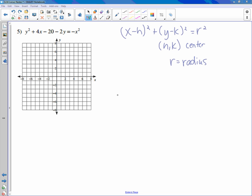So in order to do that, we're going to have to do something that's called completing the square. That's when you take an equation that's not a perfect square and you make it a perfect square so that you can figure out where the center is.